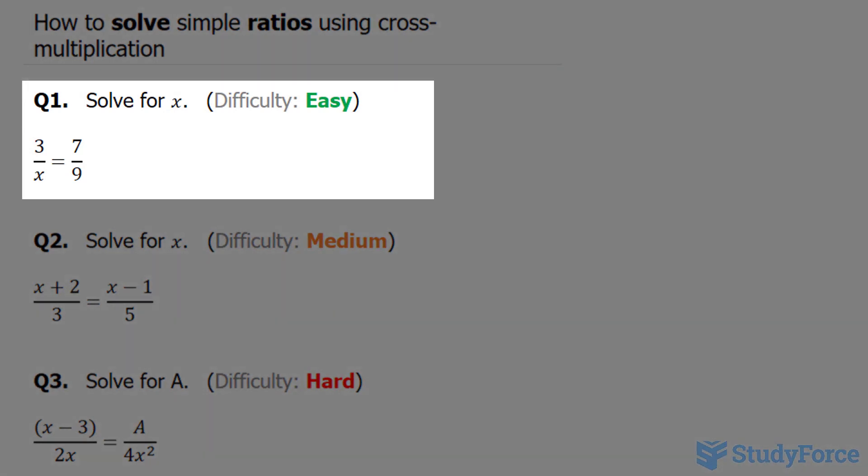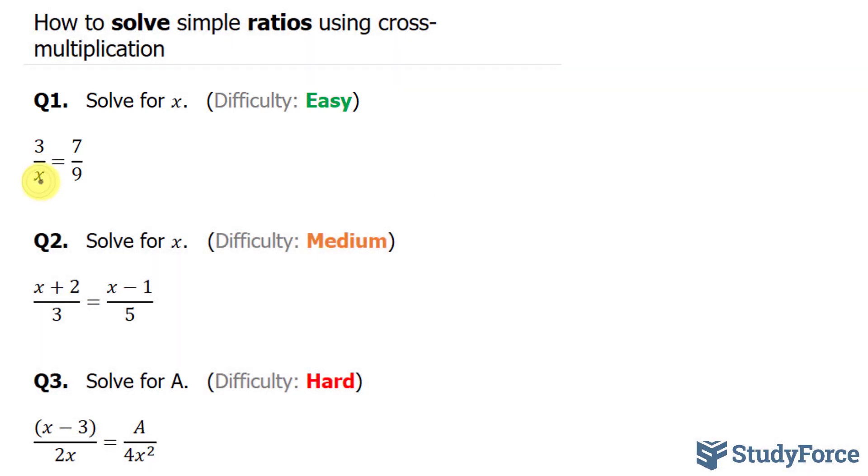Let's start with question one. They ask us to solve for x. And the target here is this x. So what we will do is multiply or start with the bottom left corner. x times 7, so we're cross multiplying to the 7, is 7x.